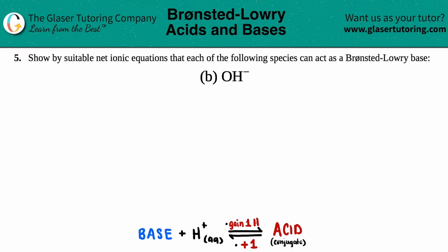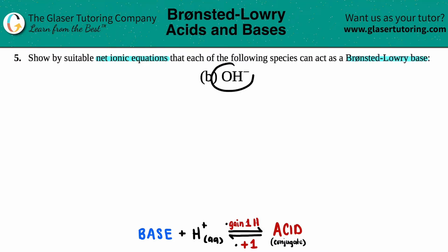Number 5, letter B. Show by suitable net ionic equations that each of the following species can act as a Bronsted-Lowry base. In this case, we need to show that OH- can act as a Bronsted-Lowry base via a net ionic equation.